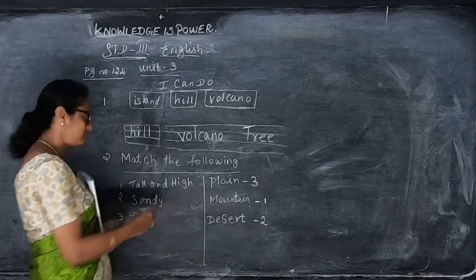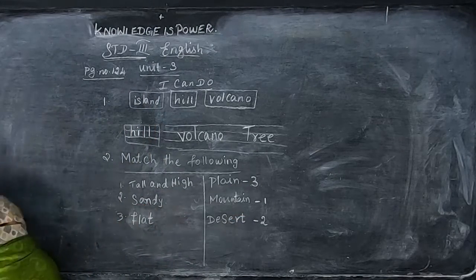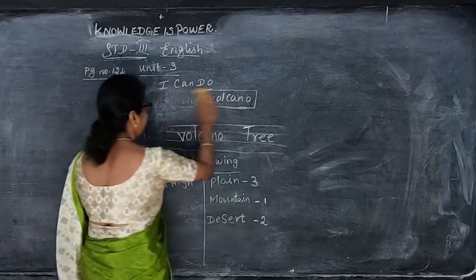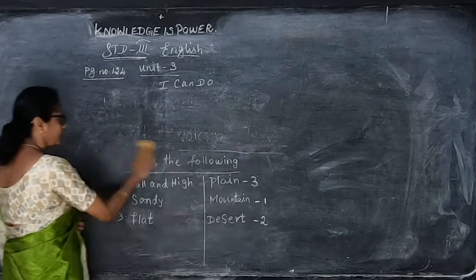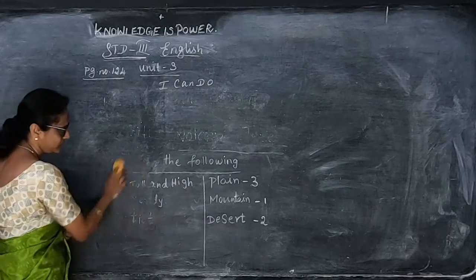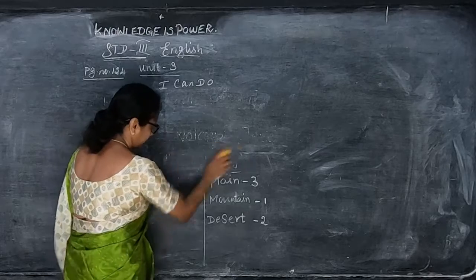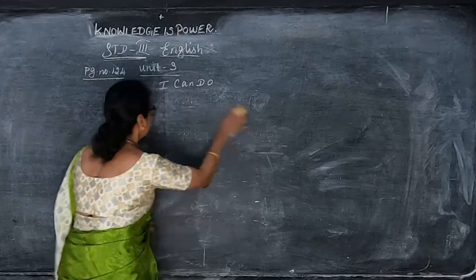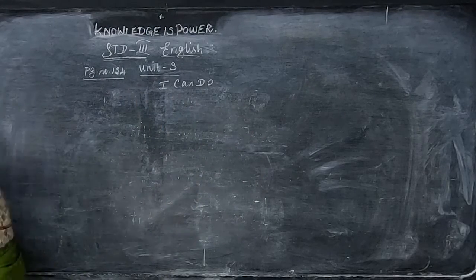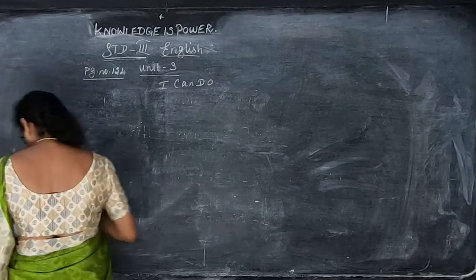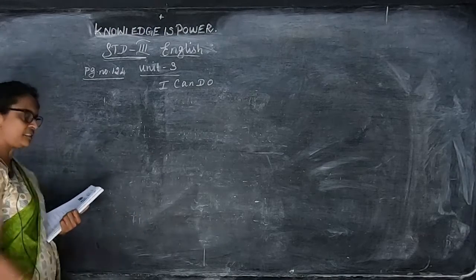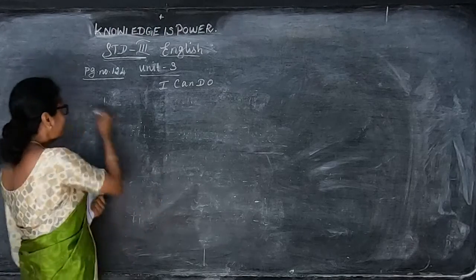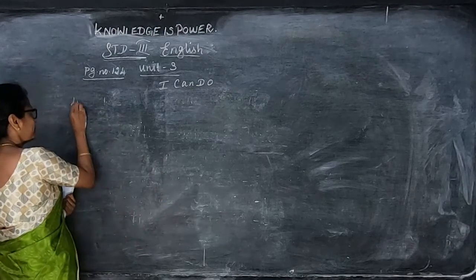Match the correct answer with numbers. Now we will move on to the next one. They are given a poem — 'Beauty of Nature' — which we will see at the end of this session. Now I will move on to the fourth exercise: circle the words with I-R and U-R.